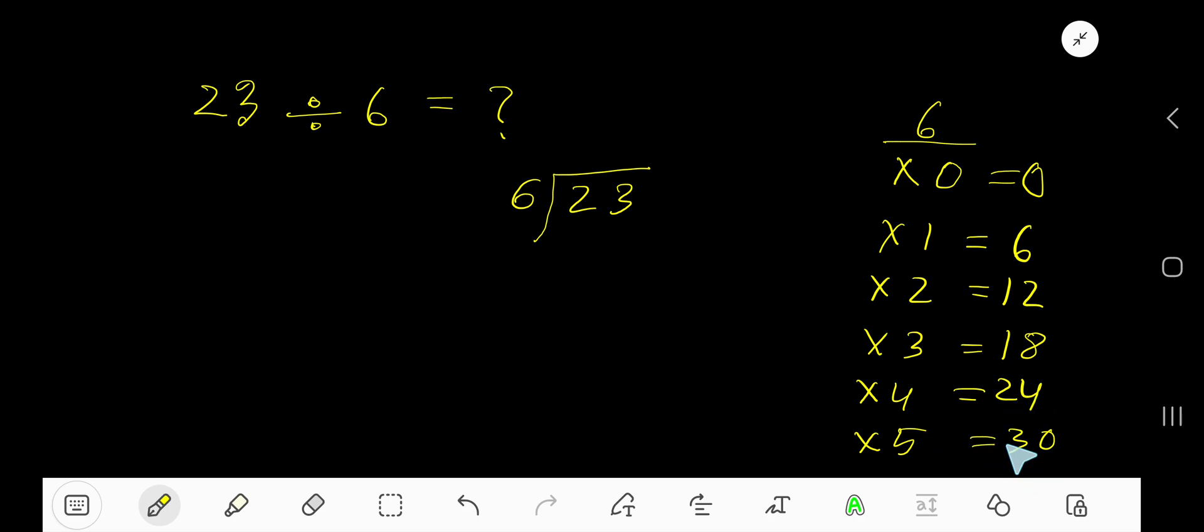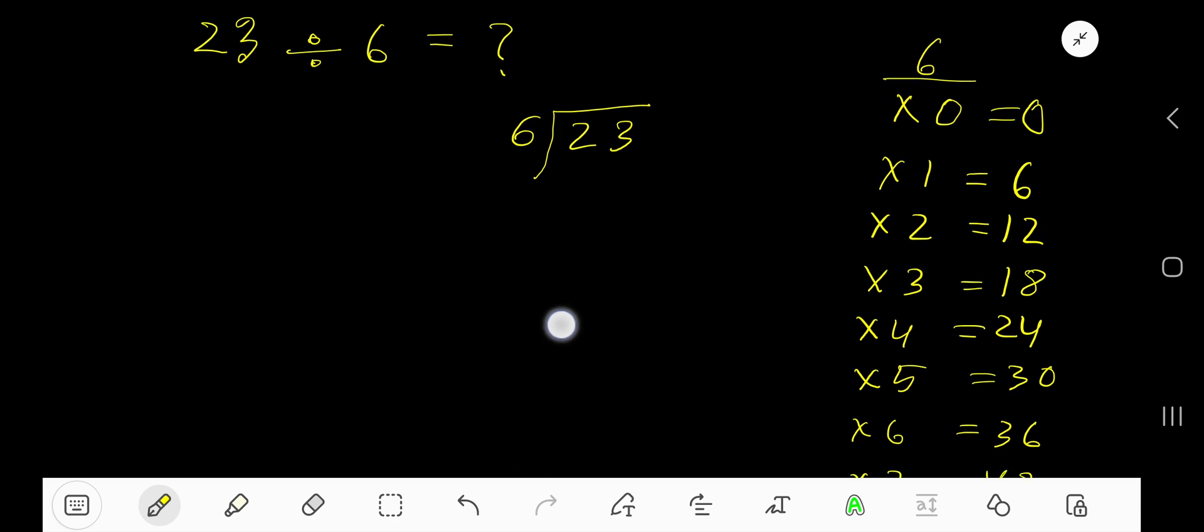is 30. To find out the multiplication table of 6 easily, just add 6 with the previous step. 0 plus 6 is 6, 6 plus 6 is 12, 12 plus 6 is 18, 18 plus 6 is 24, like this.